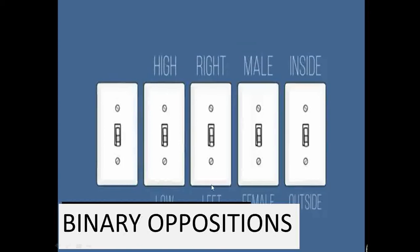Binary opposition generally seems to privilege one over the other: high over low, right over wrong, right over left, male over female, inside over outside. There is always a certain opposition occurring inadvertently and we are doing it unconsciously. For instance, if there are Christians and Jews in a Jewish minority, the Christians are privileged — they seem to be standing on opposite sides, not together.